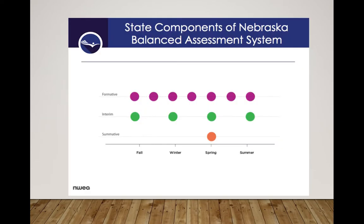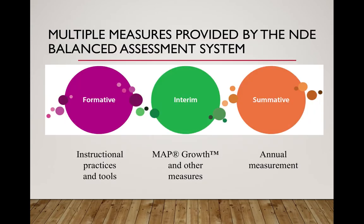There are a multitude of components of the Nebraska Balanced Assessment System, but do we really know what each of these are assessing, and do we know how we can best utilize the results from these assessments? The multiple measures provided by the NDE Balanced Assessment System are formative, interim, and summative assessments.